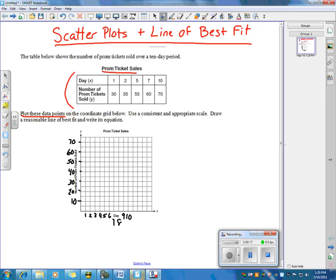I already constructed a scale. I went up by one on the x-axis for days and went up by fives for each line on the y-axis. So first point is 1, 30. We got 2, 35, then 5, 55, then 7, 60, and the last one is 10, 70. Those points look good.